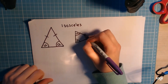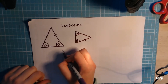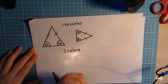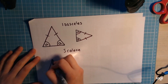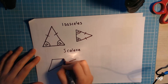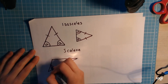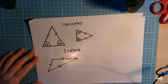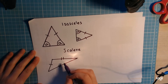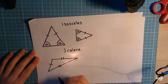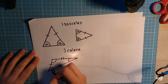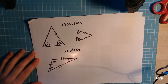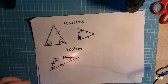Don't forget an isosceles triangle doesn't always have the base at the bottom — it could be presented in a different orientation, so your matching angles could be elsewhere. Be careful not to assume. Then the scalene triangle basically just doesn't follow any rules — it has three different side lengths and three different angles, so scalene is the 'if all else fails' triangle if it doesn't fit any other category.